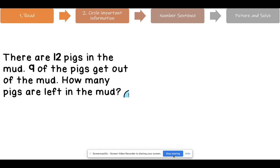Let's read this word problem. That is our first step. There are 12 pigs in the mud. 9 of the pigs get out of the mud. How many pigs are left in the mud? Now that we read the story and the word problem, let's circle our important information. Can you see what's important here? Excellent. 12 is important. 9 is important. Get out is important because that's letting us know that we have less. And how many pigs are left in the mud is important because that is the question that we need to answer.